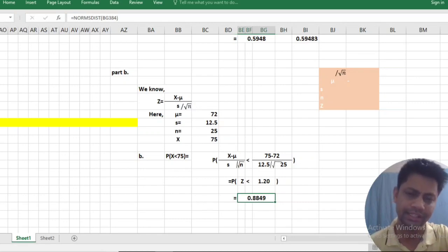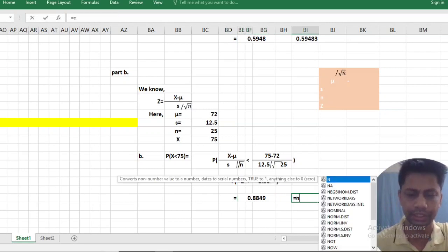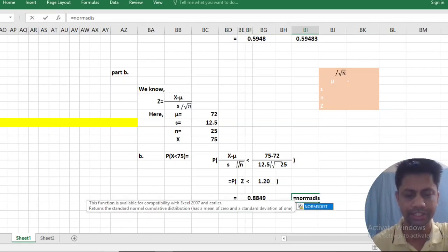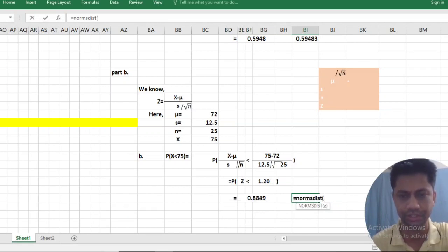By using Excel, I have calculated the z value. What is the z value? This is NORM.S.DIST, 1.20. We have got our desired result.